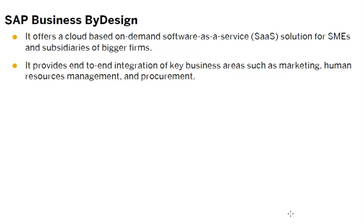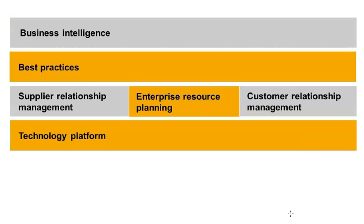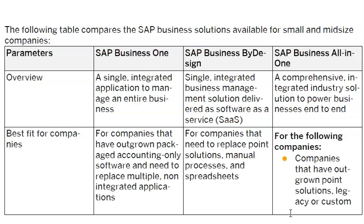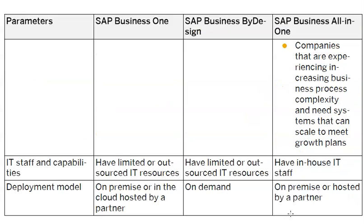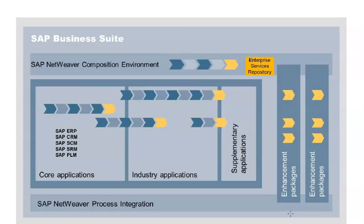In the cloud-based offering, SAP has given software as a service. Software as a service means we make use of software without it being installed in our own systems. This is about SAP Business All-in-One. We are going to come back and compare the offerings for Business One, By Design, and All-in-One — all of these are for small scale industries. SAP Business Suite will integrate a lot of things, and we will come back to that.